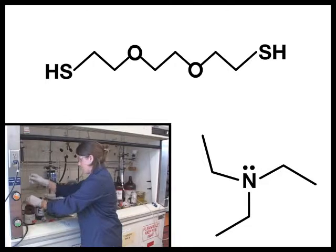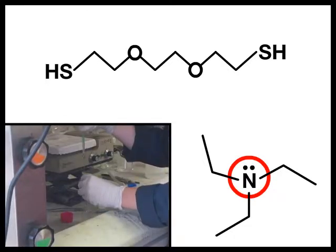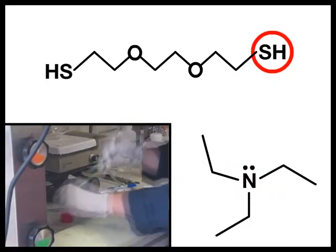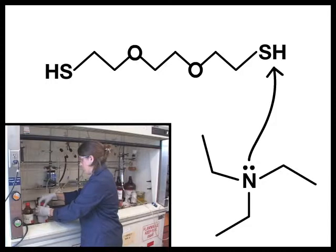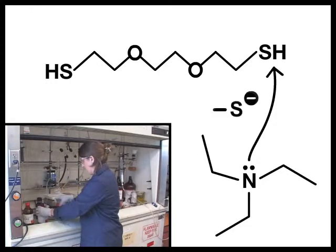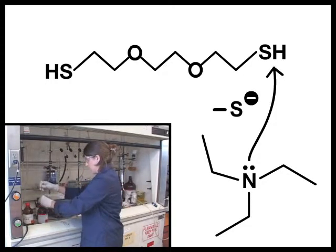The lone pair of electrons on the nitrogen are able to remove a proton from the end of the monomer. This turns the thiol group at the end of the monomer into a thiolate anion, which reacts more quickly.